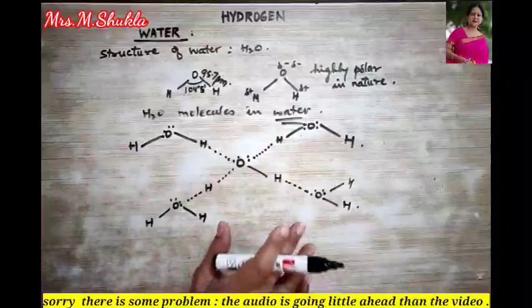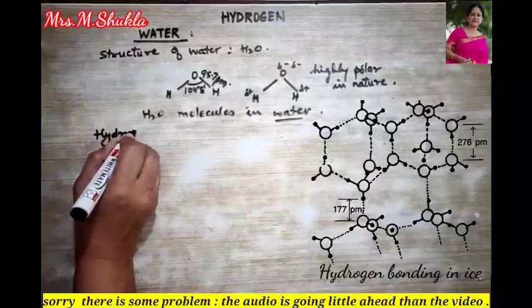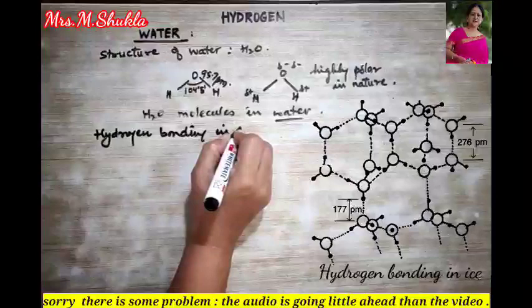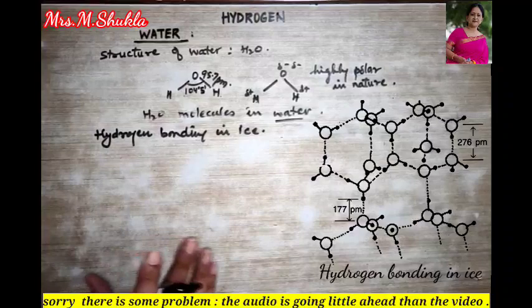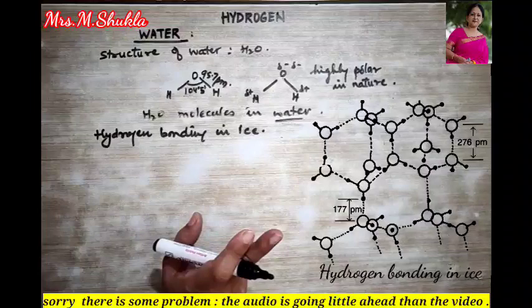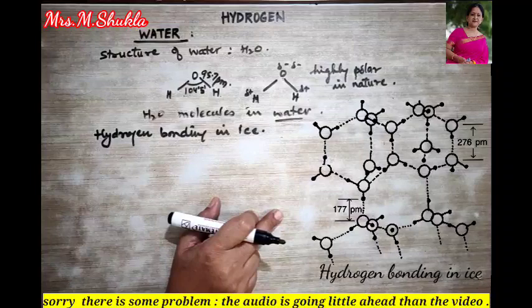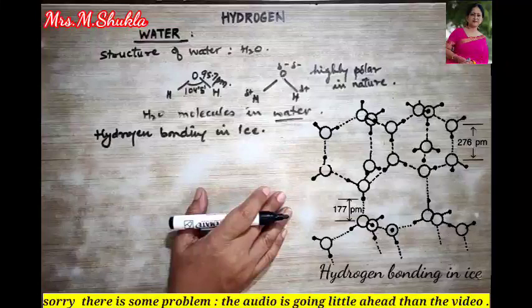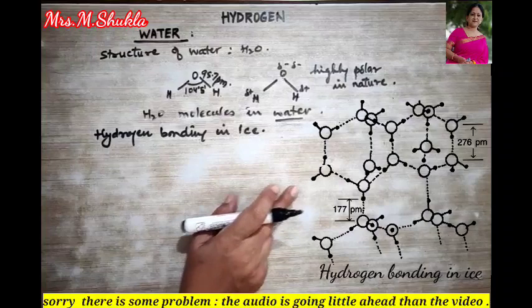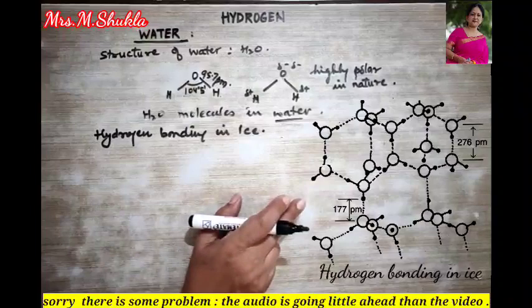Next we talk about hydrogen bonding in ice. In ice there is the maximum possibility of formation of hydrogen bonds between water molecules. Under normal atmospheric pressure, ice has a hexagonal crystalline structure. In this crystal structure, each oxygen atom is surrounded by four oxygen atoms of other water molecules, and there is one hydrogen atom between each pair of oxygen atoms. This leads to an open crystal structure of ice.